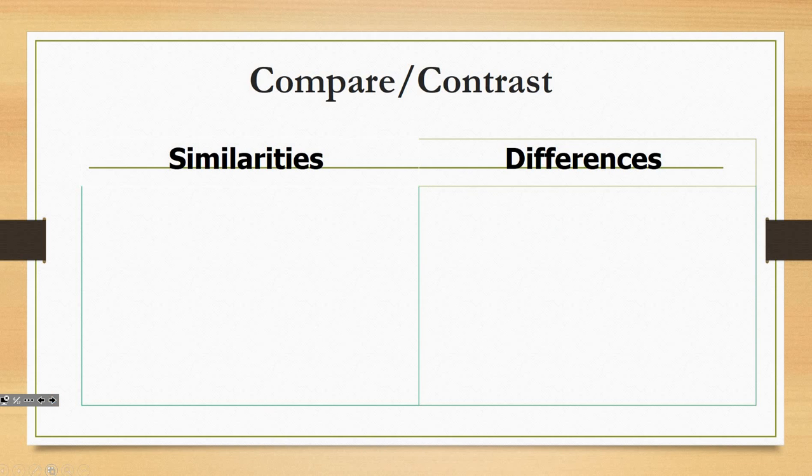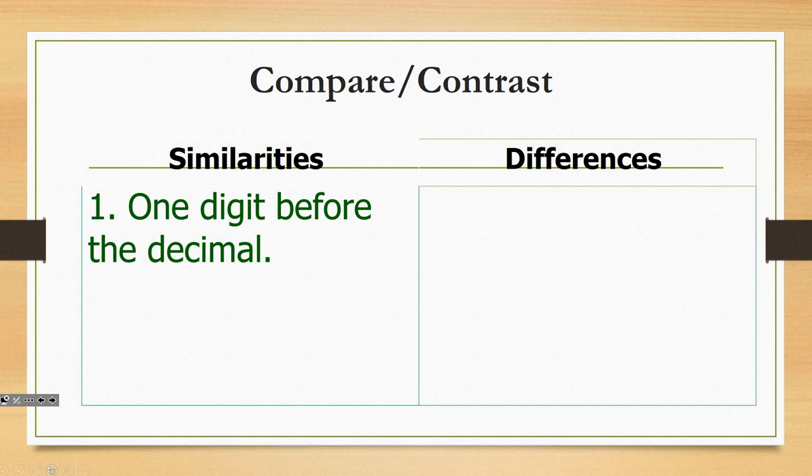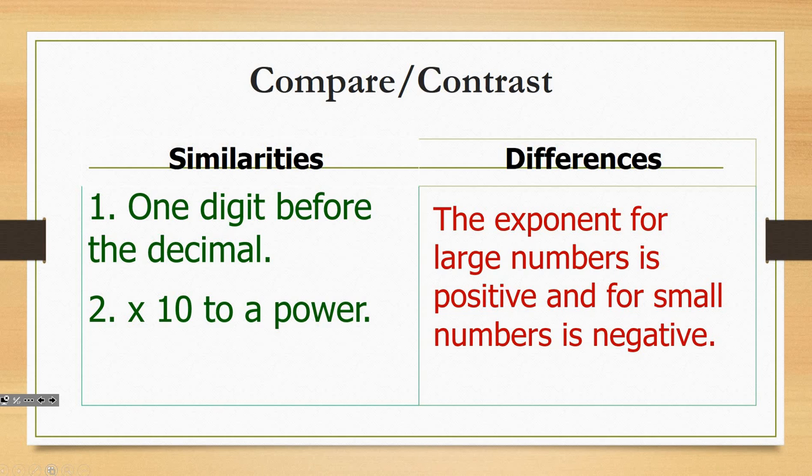So let's talk about the differences and the similarities. Similarities between the big numbers and the small numbers is we're going to have one digit before the decimal all the time. So I want to move that decimal until there's one digit before it. The second thing I'm going to have in common is it's going to be times 10 to a power. What's different? Who can tell me what the difference is between a big number and a small number? The exponent. If it's positive, it's big. If it's negative, it's small.